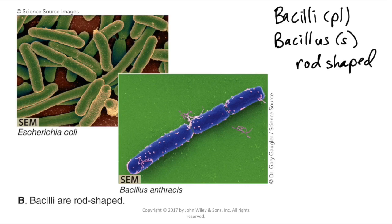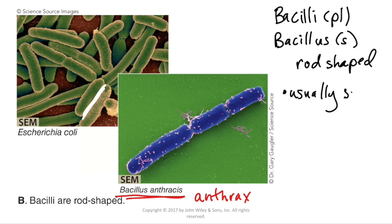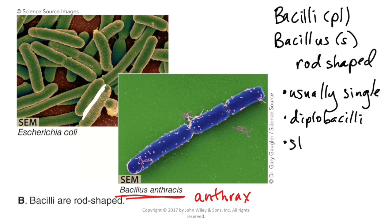You can see bacilli really nicely in our picture of E. coli — nice long bacteria. You've all heard of E. coli; you may have also heard of Bacillus anthracis, which causes anthrax — the whole genus name tells you what it looks like. Bacilli are usually found as single bacteria, sometimes as diplobacilli, and occasionally some genus and species can be found as streptobacilli.